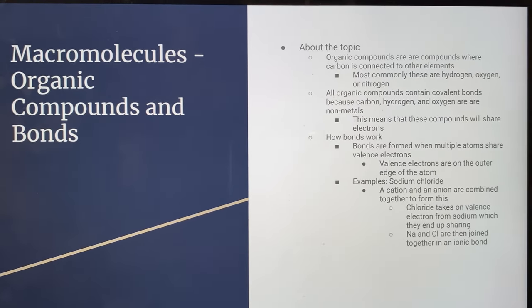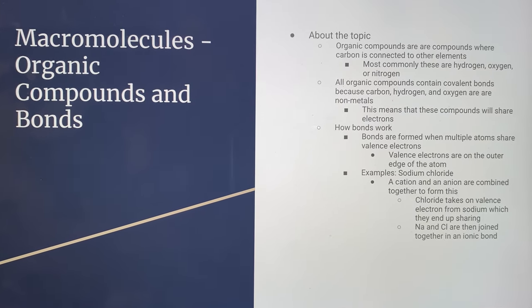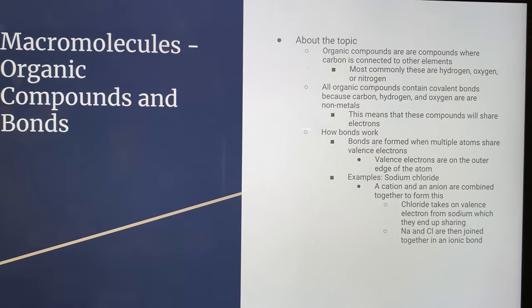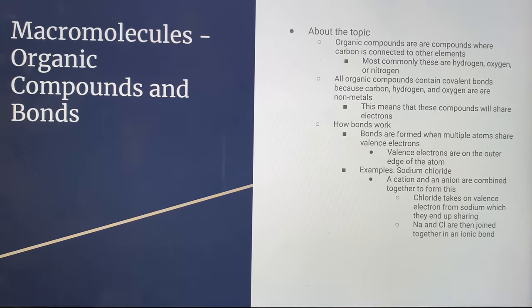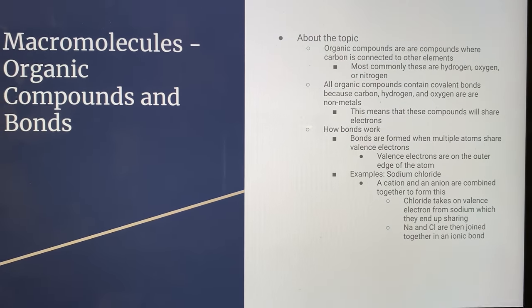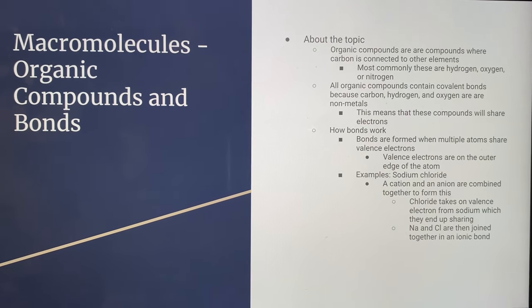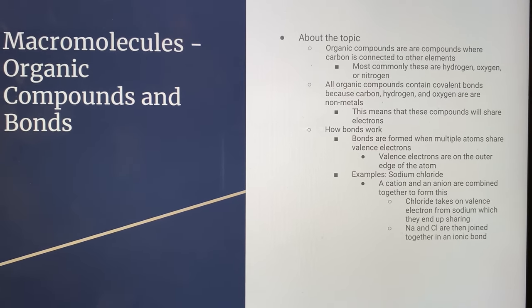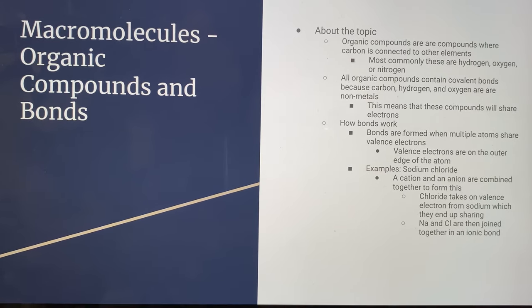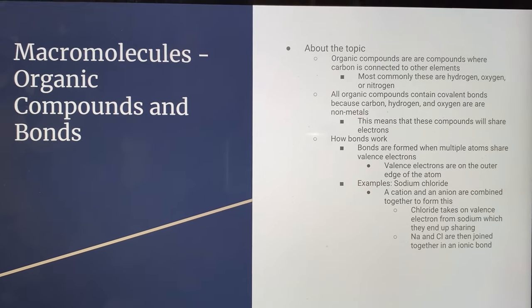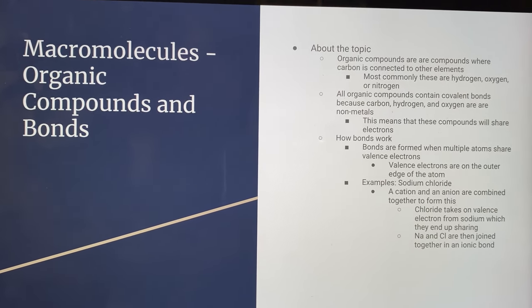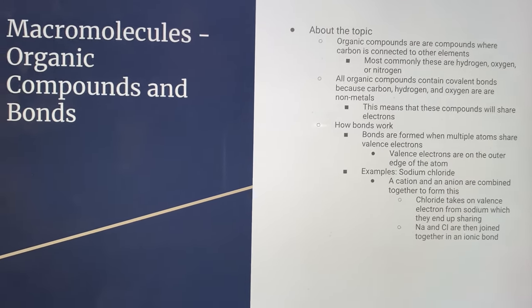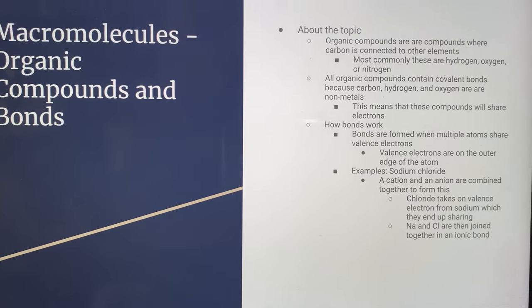All organic compounds contain covalent bonds because carbon, hydrogen, and oxygen are all non-metals, which makes it a covalent bond. This means these compounds will share electrons. Bonds are formed when multiple different atoms share valence electrons. Valence electrons are on the outermost ring of an atom.